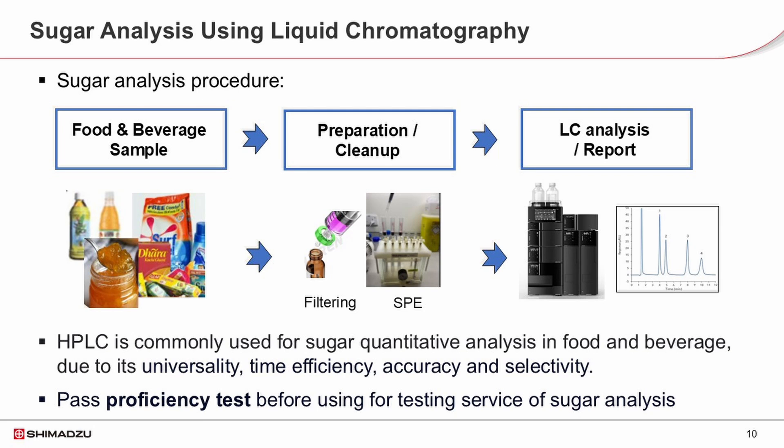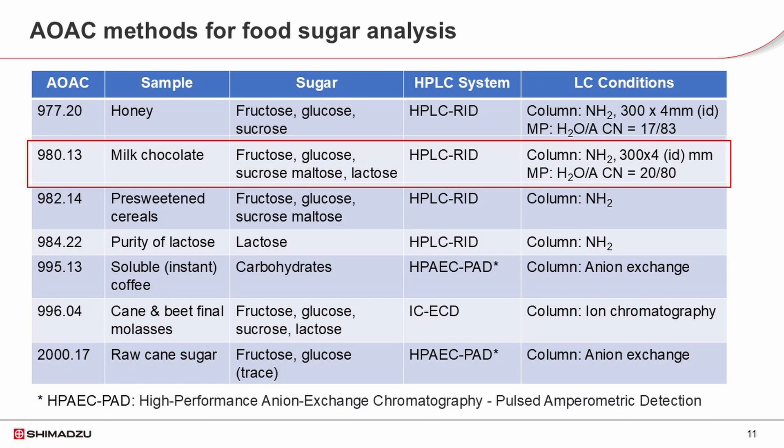The analysis procedure and method must be validated and pass the proficiency test before it can be used for providing testing services for commercial products. AOAC has recommended a number of official methods for food sugar analysis in various types of samples. As we can see from this summary table, more AOAC methods use an amino column with water and acetonitrile as the mobile phase. RID is the recommended detector; however, ELSD can be used as an alternative option with similar or modified LC conditions.